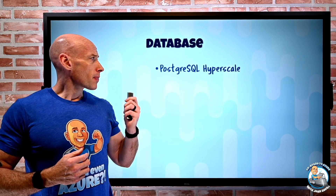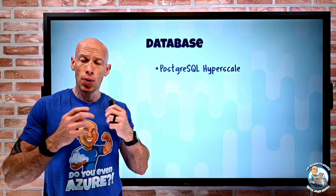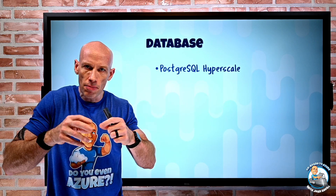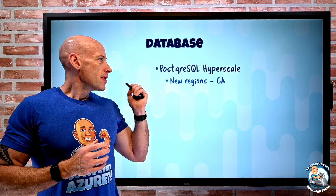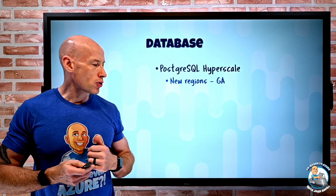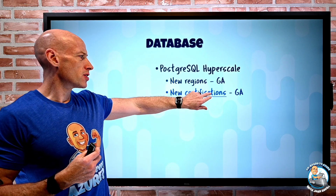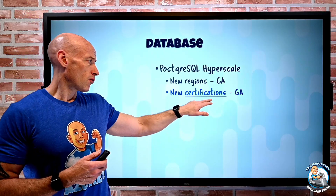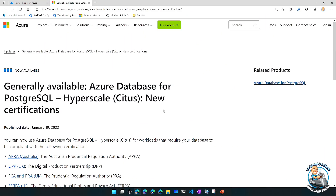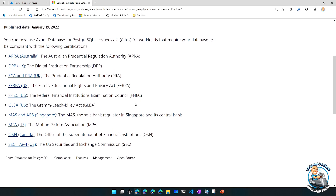On the database side, Postgres Hyperscale — using the Citus extension to give distribution of data over multiple worker nodes — is now available in new regions. East Asia and Central India now have Postgres Hyperscale. And there are a whole bunch of new certifications made available for it. If we look, there's a giant list of certifications now available for Postgres Hyperscale, so if those relate to any industries you're in and you require those, this should make things a whole lot easier.